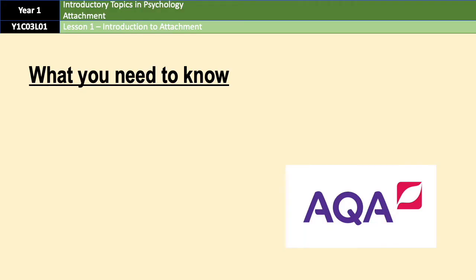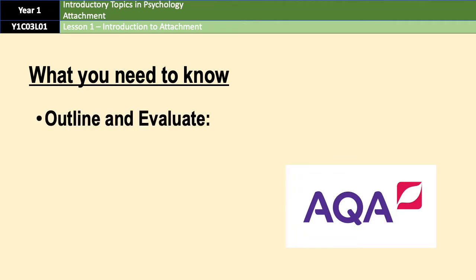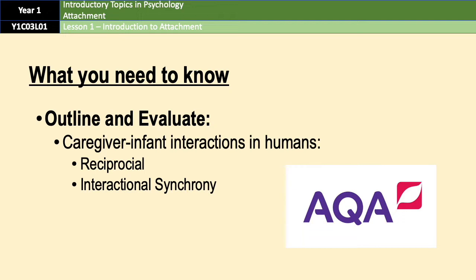This is what we need to know for this very first chapter. We need to be able to outline and evaluate caregiver-infant interactions in humans. Specifically, that means we need to look at reciprocity and interactional synchrony — both being specific ways in which infants and caregivers interact with each other in order to form an attachment.